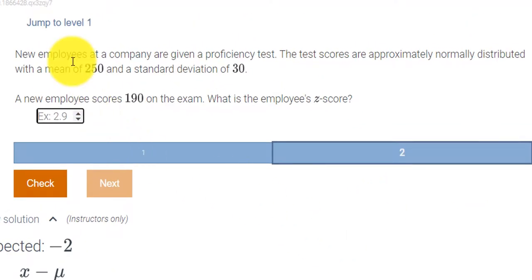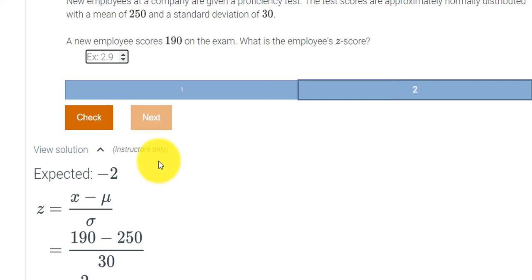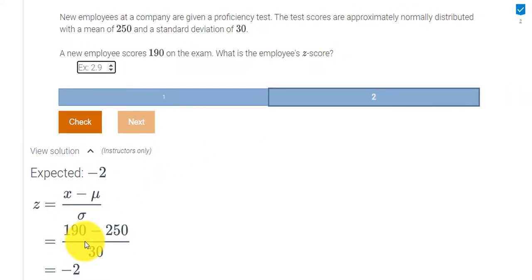Okay. So it says new employees at a company are given a proficiency test. The test scores are approximately normally distributed with a mean of 250 and a standard deviation of 30. A new employee scores 190 on the exam. What's the employee's Z score? And actually, it looks like they did it for us here. They gave us the answer. The answer is negative 2.